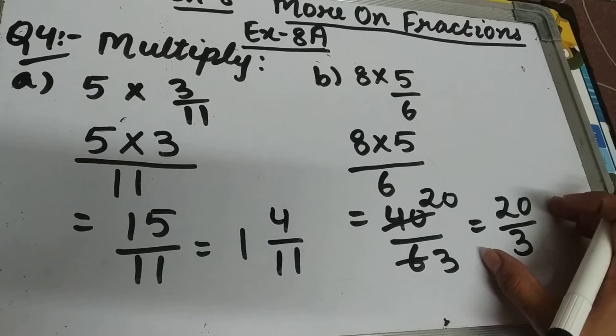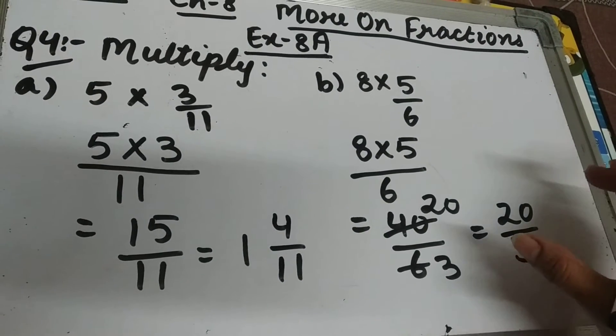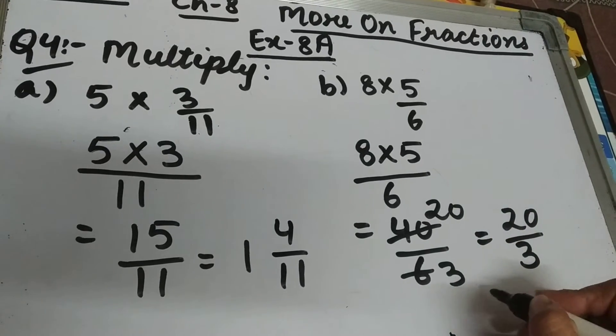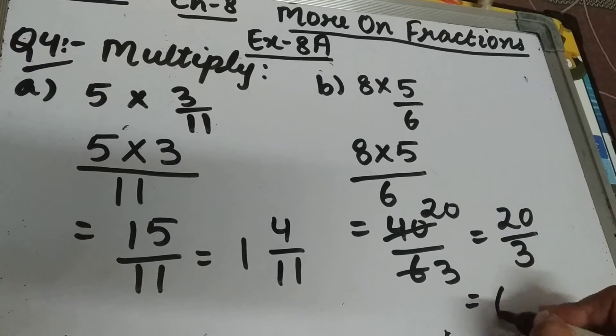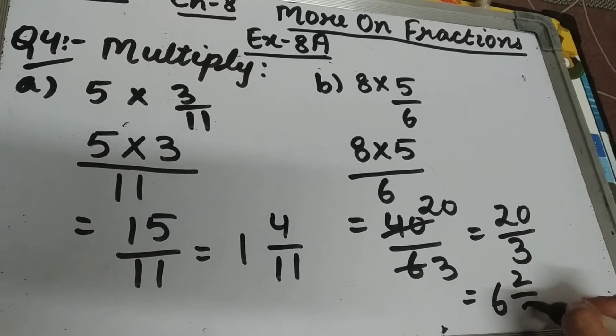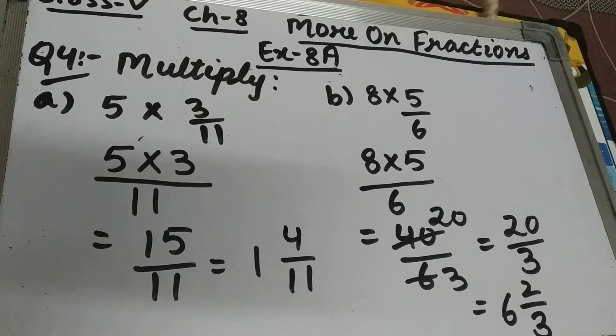Now this is an improper fraction, so convert it into a mixed fraction. 3 sixes are 18 — 2 remainder, so the answer is 6 and 2 upon 3.